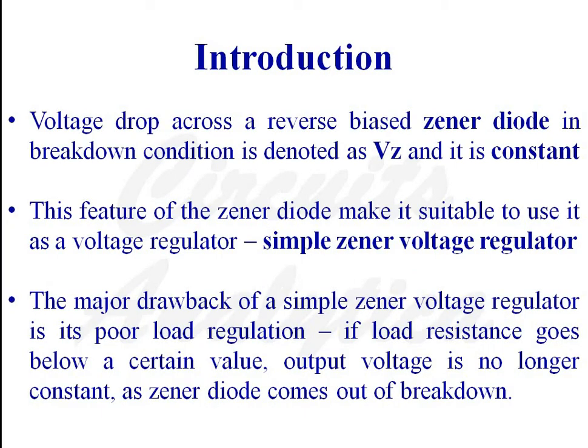The voltage drop across a reverse biased zener diode is denoted as VZ during breakdown, and it is constant. This feature of the zener diode makes it suitable to use as a voltage regulator. The major drawback of a simple zener voltage regulator is its poor load regulation — if load resistance goes below a certain value, the output voltage is no longer constant, as the zener diode comes out of breakdown.